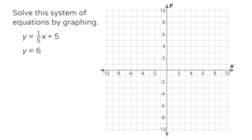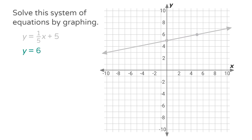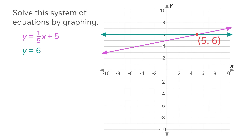Let's try another. Solve this system of equations by graphing: y equals 1/5 x plus 5, and y equals 6. The first equation is y equals 1/5 x plus 5. The y-intercept is 5, so plot the point (0, 5). The slope is 1/5, so move up 1 and to the right 5 to plot another point on the line, and draw a line connecting them. The second equation is y equals 6, and this equation doesn't depend on x at all. The equation tells you that every y value is 6. So let's plot some points with a y value of 6, like (0, 6) and (1, 6), and draw a horizontal line. They intersect at (5, 6). So the solution to the system of equations is (5, 6). Awesome!